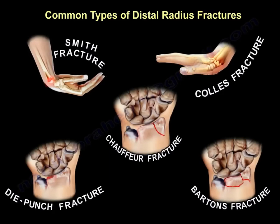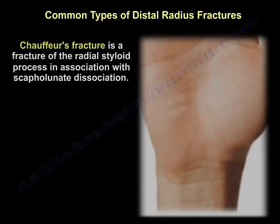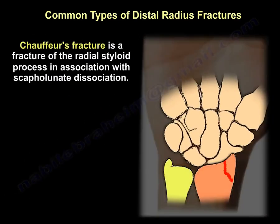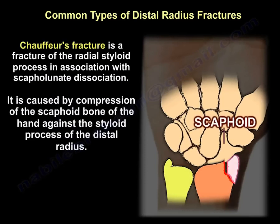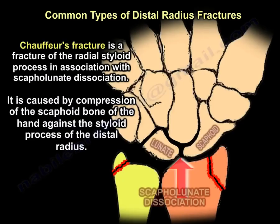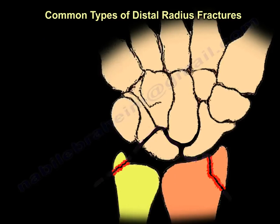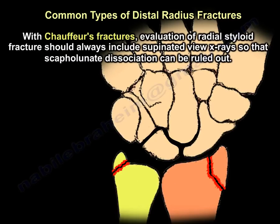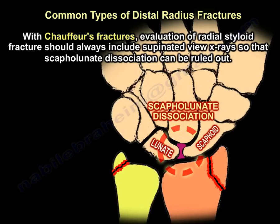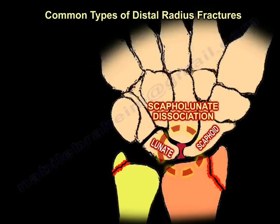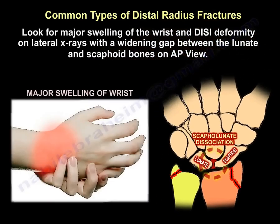The last type is the chauffeur fracture — a fracture of the radial styloid process with scapholunate dissociation. It is usually caused by compression of the scaphoid against the styloid process, shearing it off, and scapholunate dissociation is likely. Evaluation of the radial styloid fracture should always include a supinated view of the wrist so scapholunate dissociation can be ruled out. Look for marked swelling and DISI deformity on the lateral x-ray, and widening of the gap between the lunate and scaphoid on the AP view.